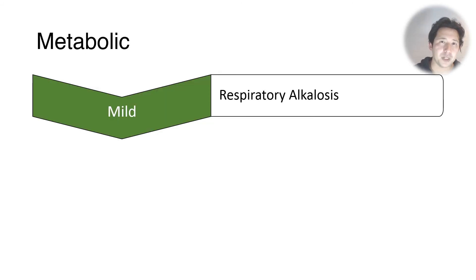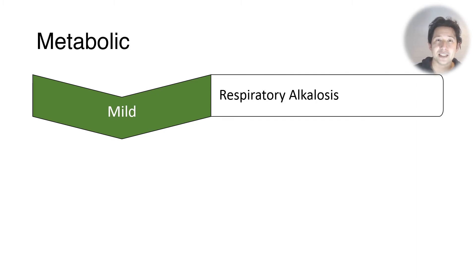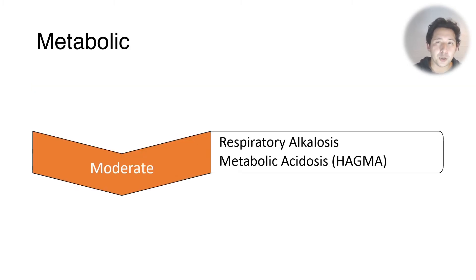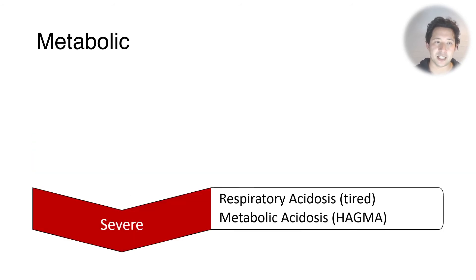In the metabolic system it depends on how bad the overdose is and what stage we're at. In mild or early stages we get a respiratory alkalosis, as salicylate from aspirin drives the respiratory center in the medulla. In moderate overdoses we get the same respiratory alkalosis but we start to get a high anion gap metabolic acidosis from the salicylic acid itself.